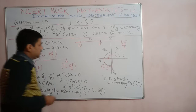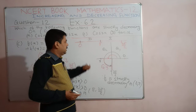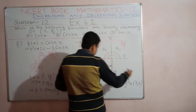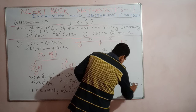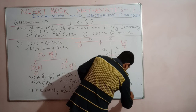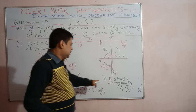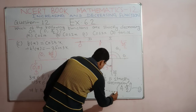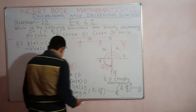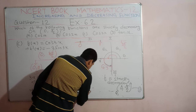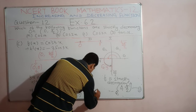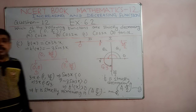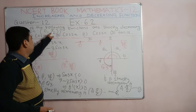So in the interval 0 to π the function is strictly decreasing, and in the interval π to 3π/2 the function is strictly increasing. Therefore, for f(x) = cos 3x, the function is neither strictly increasing nor strictly decreasing on the interval 0 to π/2.